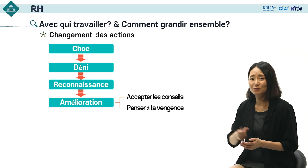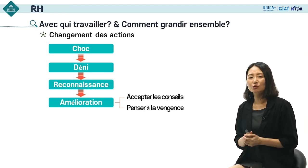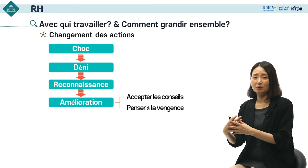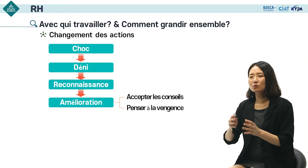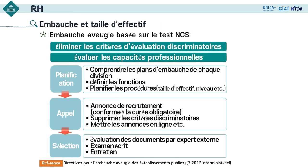Les gens travaillent pour de divers motifs et doivent se considérer comme un être qui a de la valeur. Mais il faut aussi un motif à caractère contraire pour s'améliorer. Nous adoptons la méthode qui s'appelle l'embauche aveugle. Avant son introduction, les candidats devaient mentionner leur âge, adresse, taille, poids, le nom de leur université et ajouter leurs photos sur leur CV. Aujourd'hui, ces informations ayant la possibilité de provoquer une discrimination sont toutes enlevées grâce à l'embauche aveugle.